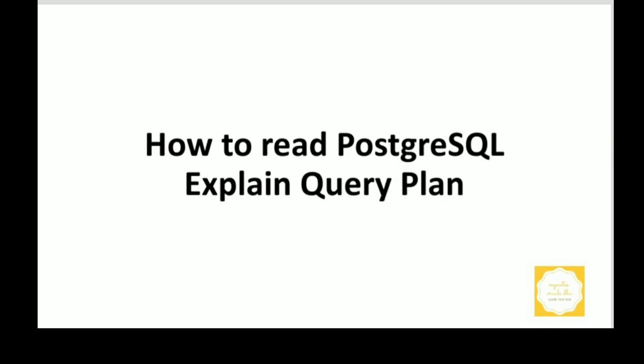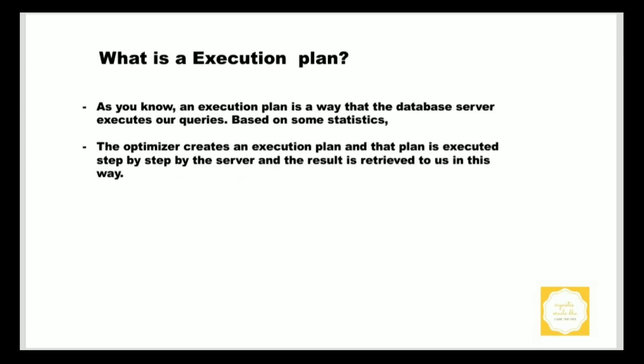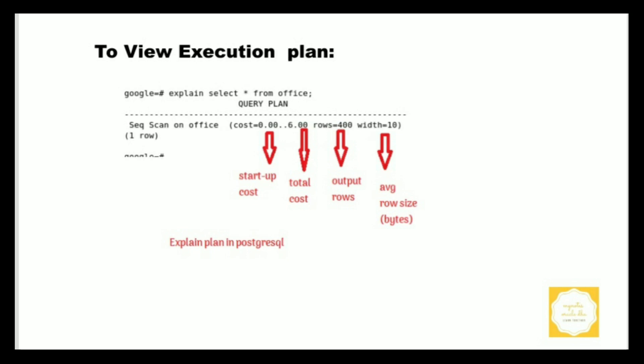Welcome to my Notes Oracle DBA YouTube channel. Today we are going to discuss how to read and understand the EXPLAIN command query plan in detail. As a DBA, we often hear about execution plans. An execution plan is the way the database server executes our queries. Based on some statistics, the optimizer creates an execution plan, and the plan is executed step by step by the server, and the result is retrieved to us.